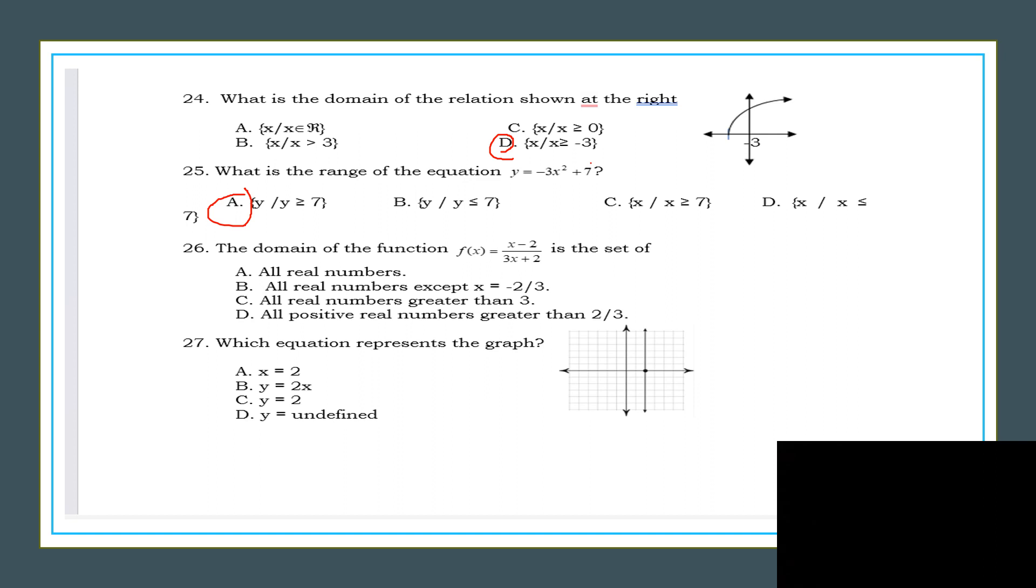Okay, 26. The domain of the function f of x equals x minus 2 over 3x plus 2 is the set of all real numbers except negative two-thirds. Now which of the following represents the graph? So this graph, what does it represent? The answer is x equals 2, because here the point is in the x-axis point 2.